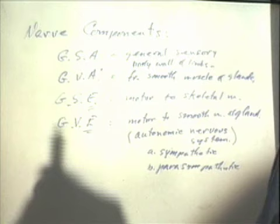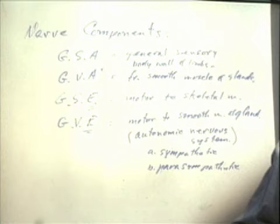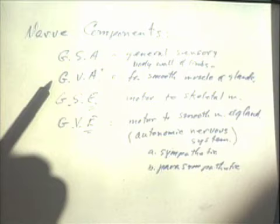The spinal nerve has all four of these components in it. The first two — GSA and GSE — are the ones just diagrammed on our cross section.